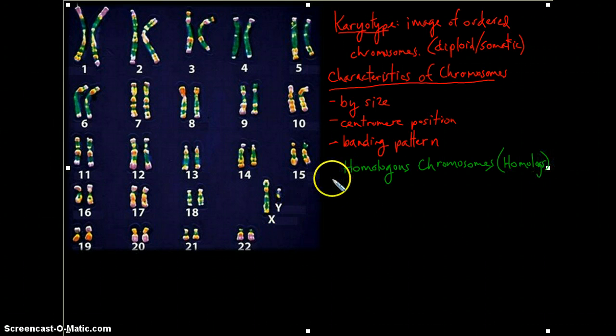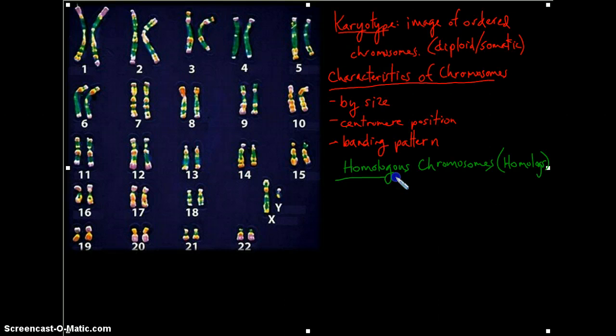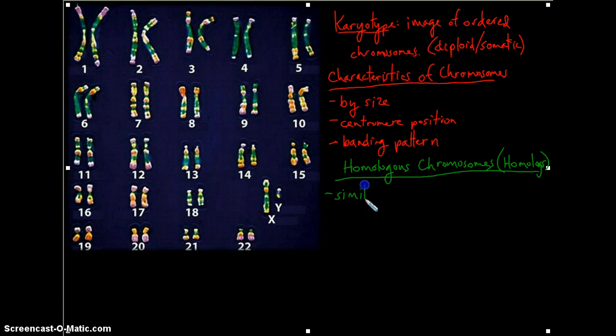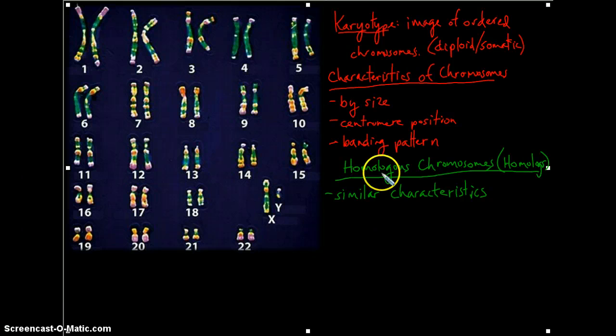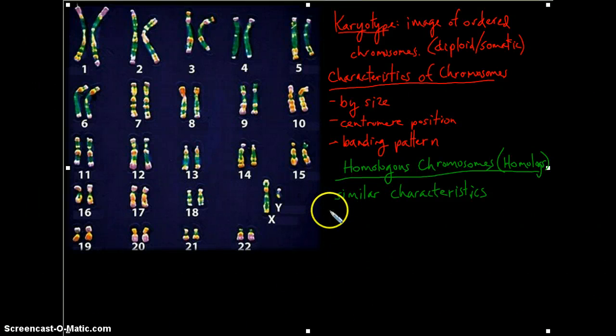These homologous chromosomes are going to have similar characteristics in size, centromere position, and banding pattern, which you certainly see when you look at the karyotype here.